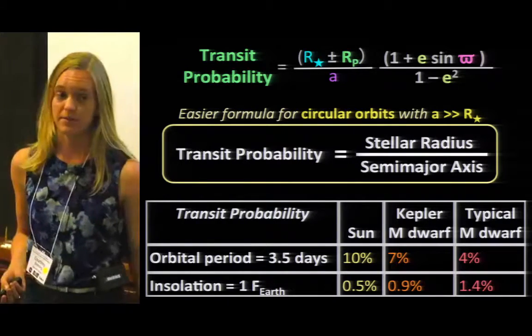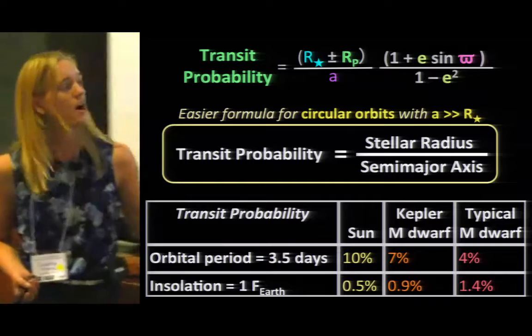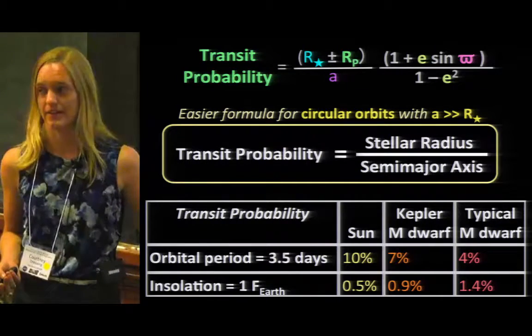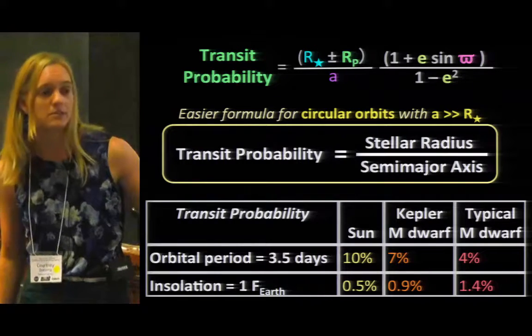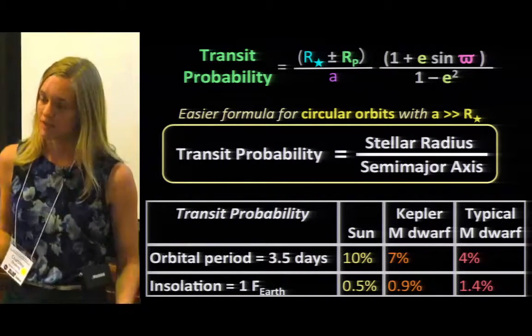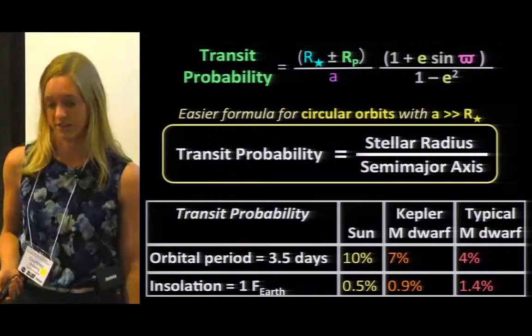If we want to put the planet out where it receives the same amount of light from the star as the Earth does from the Sun, our transit probability decreases. We end up with half a percent in the Sun-like star case. We get higher numbers for these cooler stars because they emit less light and therefore a planet that could be habitable has to be moved closer in towards the star.